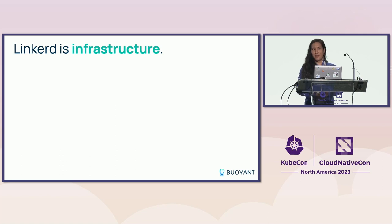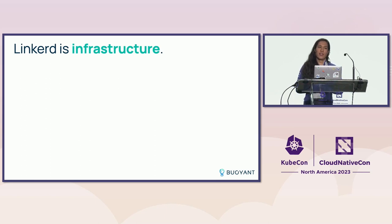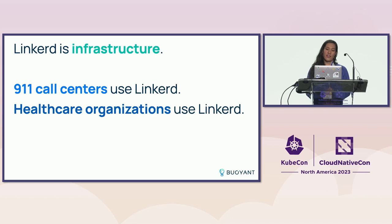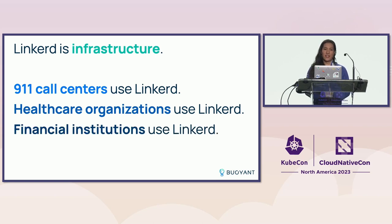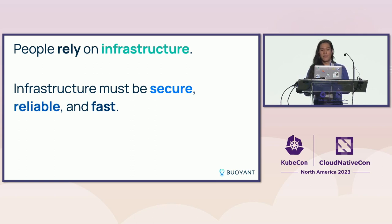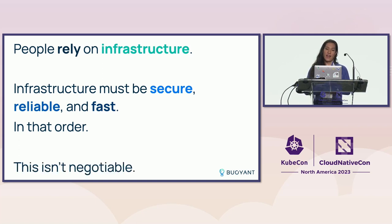Linkerd is infrastructure in two senses. First, Linkerd is network infrastructure for your application — just like the operating system or your network card is infrastructure. Second, Linkerd is used by infrastructure for humans: 911 call centers, healthcare organizations, and financial institutions all use Linkerd. These are very critical pieces of infrastructure where if they work or don't work, it's a big deal. People rely on these, so they need to be secure, reliable, and fast — in that order, and it's not negotiable.